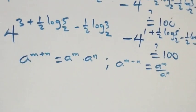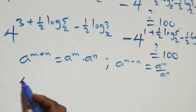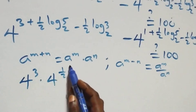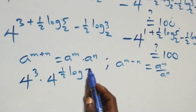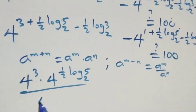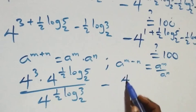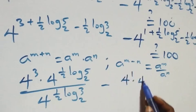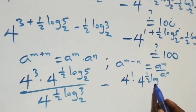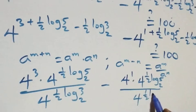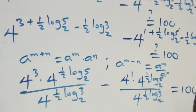Following the law of indices, a raised to power m plus n is the same as a raised to power m times a raised to power n, and a raised to power m minus n is the same as a raised to power m over a raised to power n. So we have 4 raised to power 3 times 4 raised to power (half·log₂5), over 4 raised to power (half·log₂3), minus 4 raised to power 1 times 4 raised to power (half·log₂5), over 4 raised to power (half·log₂3), equals 100.